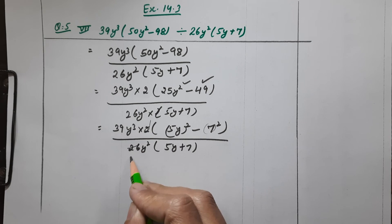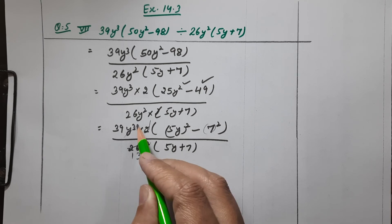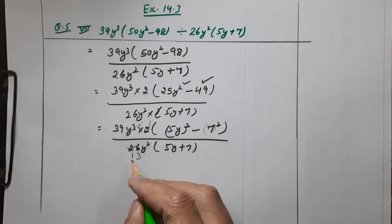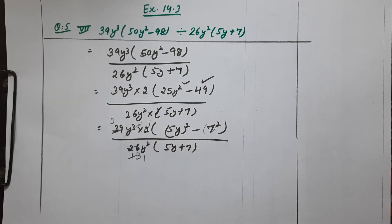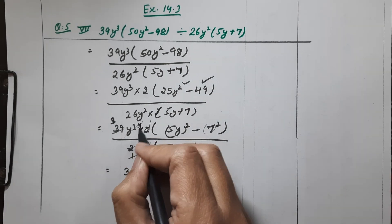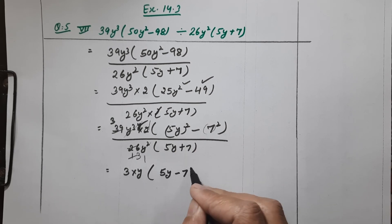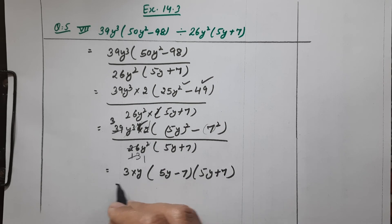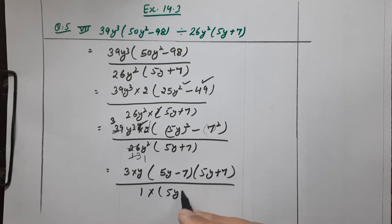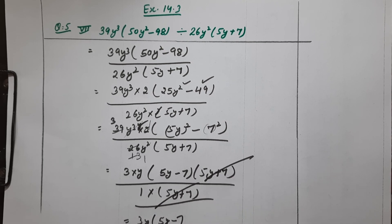Now do the cancellation: 2 into 39 over 26 simplifies — 26 and 2 give 13, and 39 over 13 gives 3. y cubed over y squared leaves y. (5y plus 7) cancels with (5y plus 7). So our final answer is 3y into (5y minus 7).